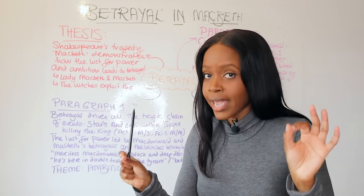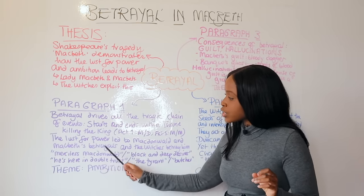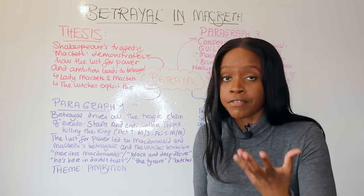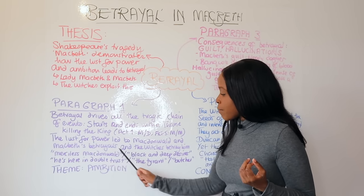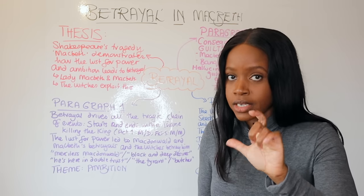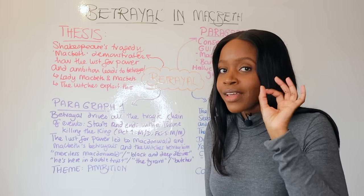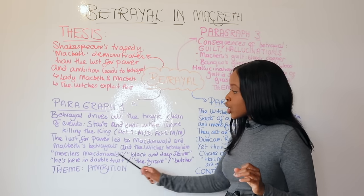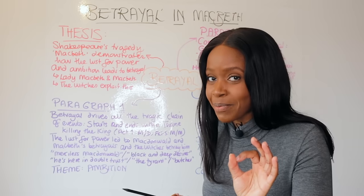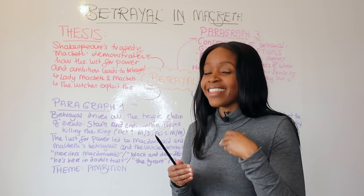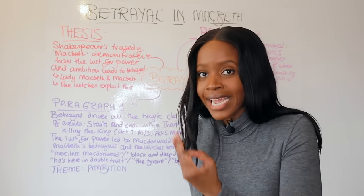And in act five, the Thane of Fife, Macduff, kills King Macbeth. Tie this to the idea that the lust for power led Macdonwald — the previous Thane of Cawdor — to cause the entire war that starts the play, and of course Macbeth's lust for power leads to him betraying King Duncan. The witches also exploit this lust, driving Macbeth to act on his desires — but ultimately the witches betray him, and he is murdered by Macduff.